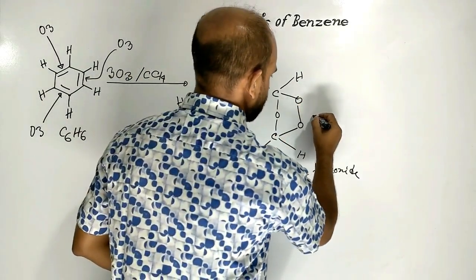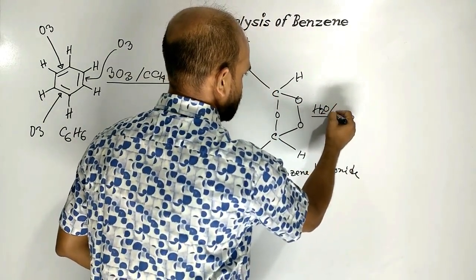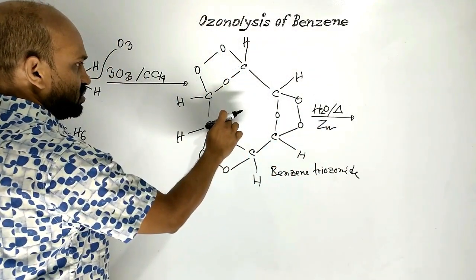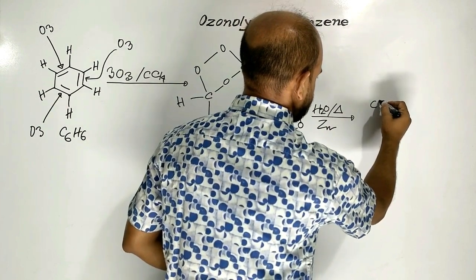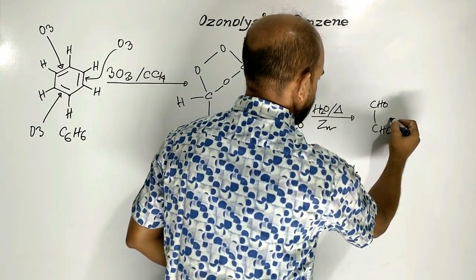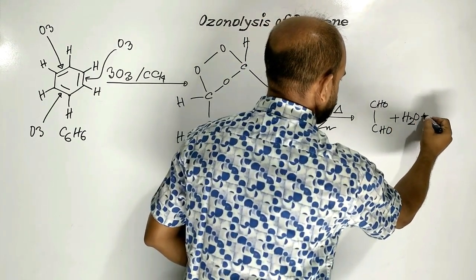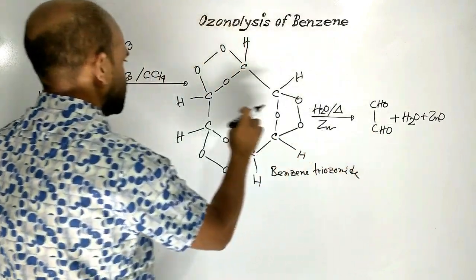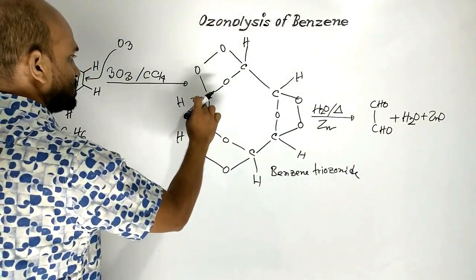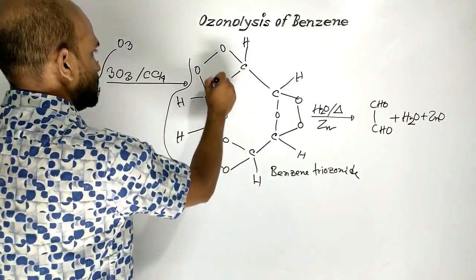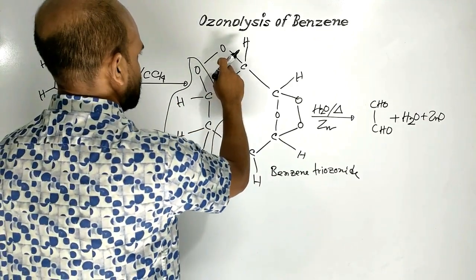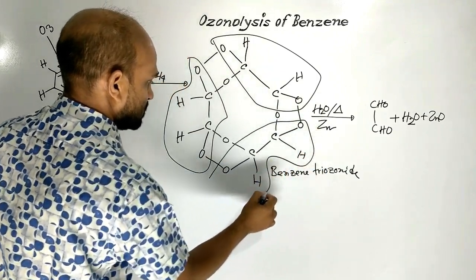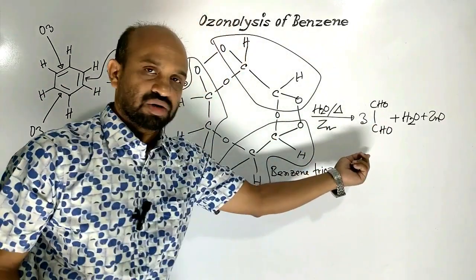Now this benzene triozonoid is hydrolyzed in the presence of warm water and zinc dust. Then benzene triozonoid converts to glyoxal. The main product is glyoxal, formed as CHO-CHO. Three molecules of glyoxal are formed from one molecule of benzene triozonoid.